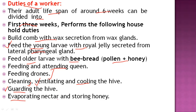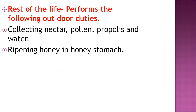Workers also evaporate the nectar and store honey inside the hexagonal cells. After the first three weeks are complete, the remaining work done by worker bees is called bee foraging — collecting nectar, pollen, propolis, and even water from moving sources for cooling the hive. A major function is also ripening the honey in the honey stomach — the conversion of honey — all done by the worker bees.